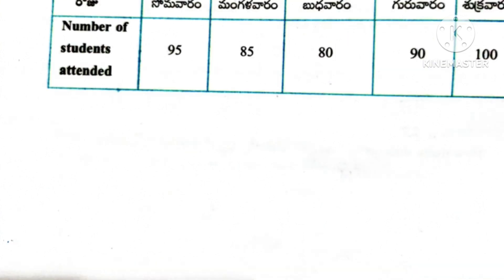Question number 2: The table below shows the number of students who attended a science class over 5 days. Prepare a bar graph with the given data. Number of students on Monday: 95; Tuesday: 85; Wednesday: 80; Thursday: 90; Friday: 100. Now we have to prepare a bar graph from this data.